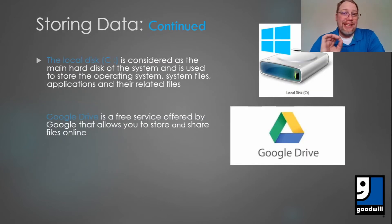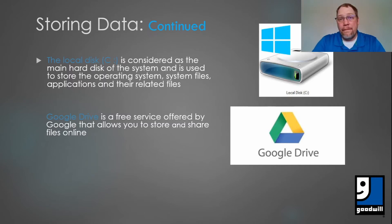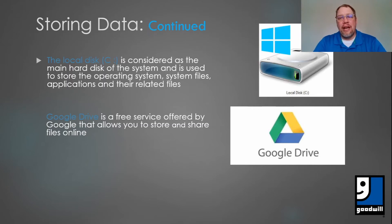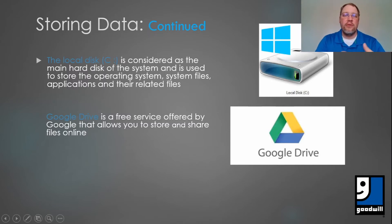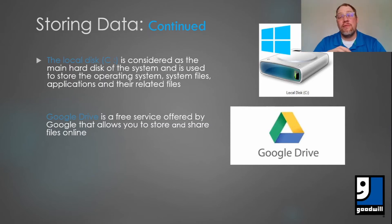We also have our local disk, or C disk. It is considered the main hard disk of the system and is used to store the operating system, system files, applications, and related files. If you own a computer, you will use a C disk at some point. As you can see here, on a Windows computer it is usually indicated by this icon, depending on whether you're using Windows 7 or Windows 10. It is where your operating system and everything is going to be stored on your computer.